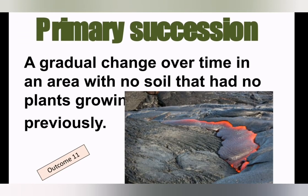The last thing we are looking at in this video is how a population or ecosystem will recover or start from scratch. This happens in two ways. The first is called primary succession, which happens when an area has had no soil. Primary succession is defined as a gradual change over time in an area where there is no soil and no plants were growing previously.